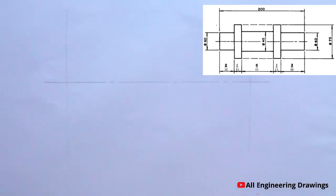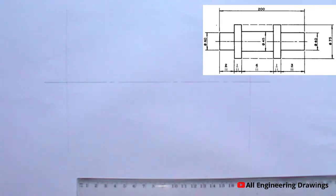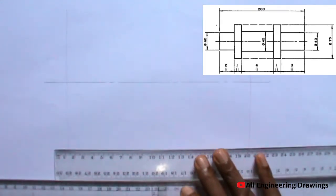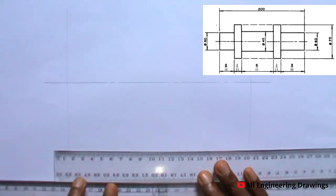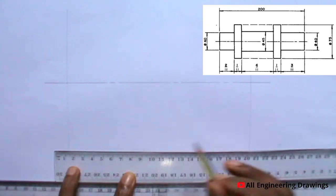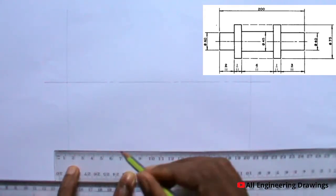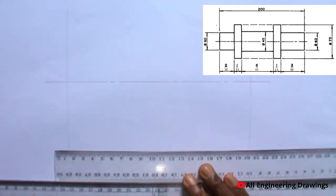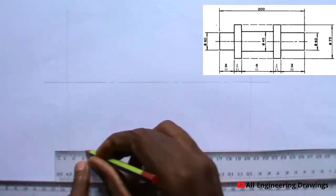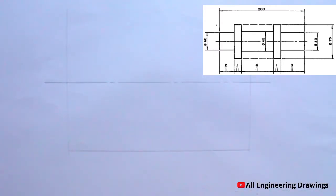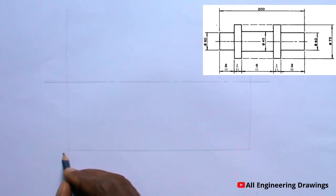Next, draw a line this way. The line should touch these two vertical lines. Now, label the point where the line touched the two vertical lines.